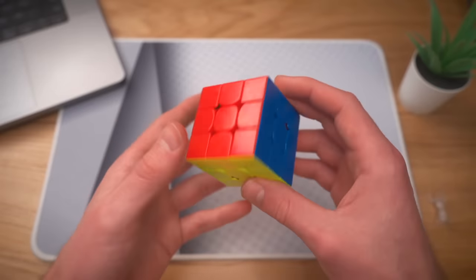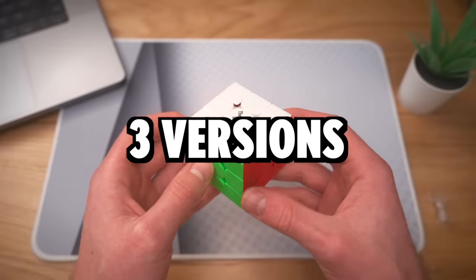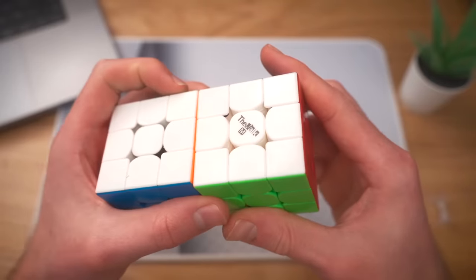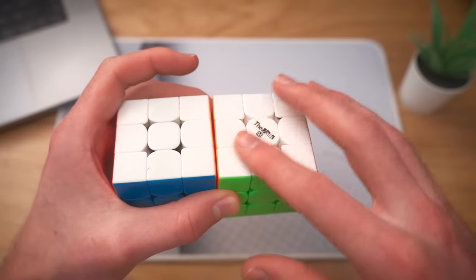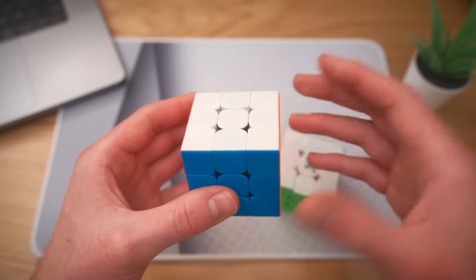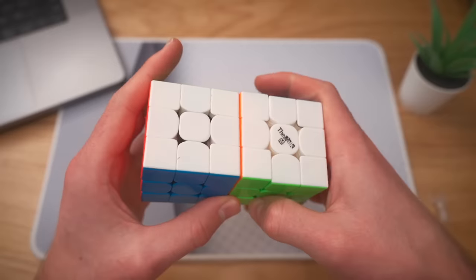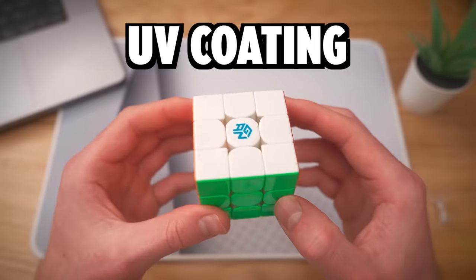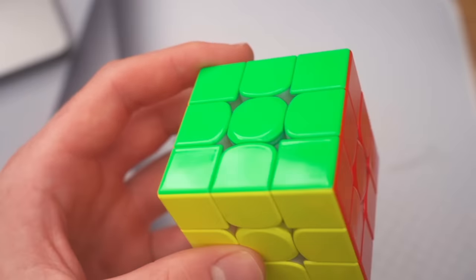But when we're talking about stickerless cubes, there's three different versions. There used to be just two where you had a matte finish like this or a glossy finish. Now, the glossy finish usually gives a bit more grip. But the matte finish is better at performing when you have sweaty hands. But since very recently, we have a third alternative. UV coating. In other words, super shiny.